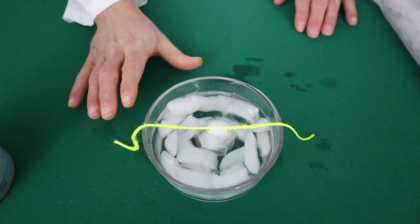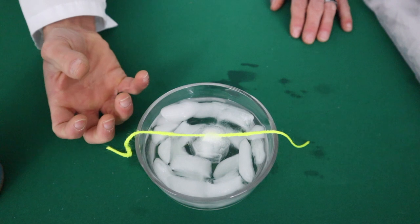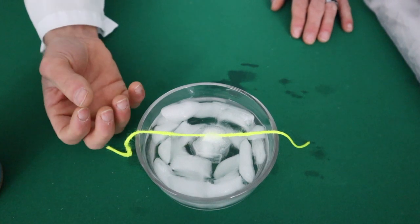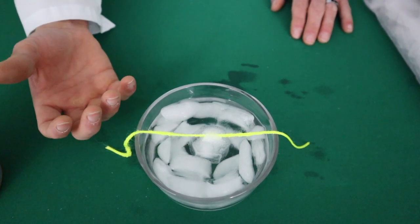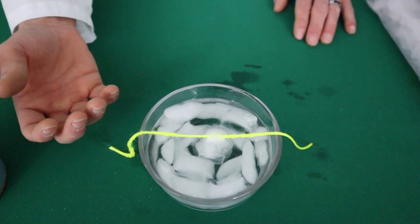Now one thing that you should keep in mind if you try this at home is if the water is too warm it's going to melt the ice cube rather than re-freeze to the ice cube. So you want cold water so that the water is able to re-freeze around the string once the salt melts the ice.